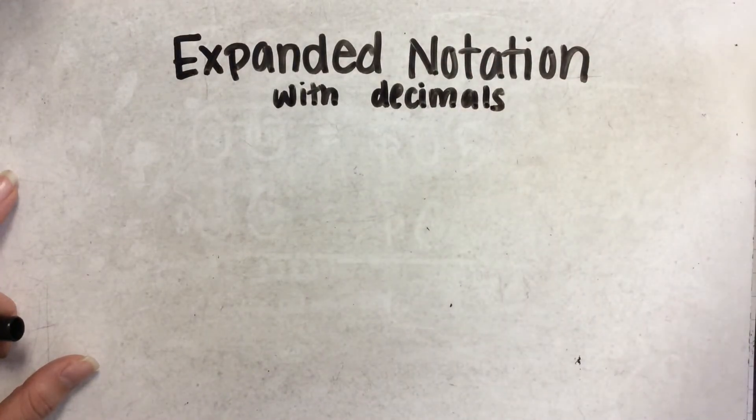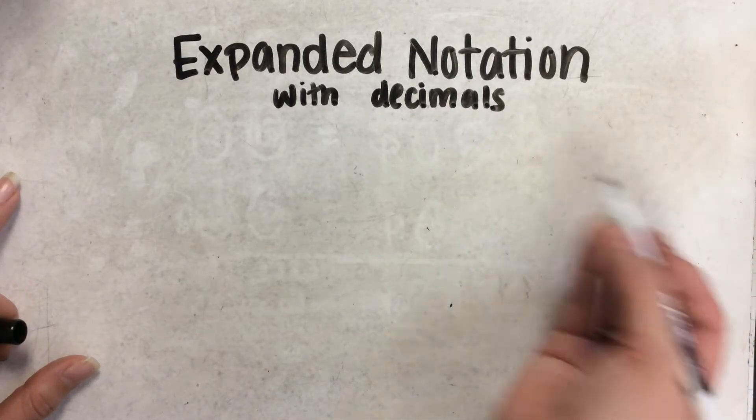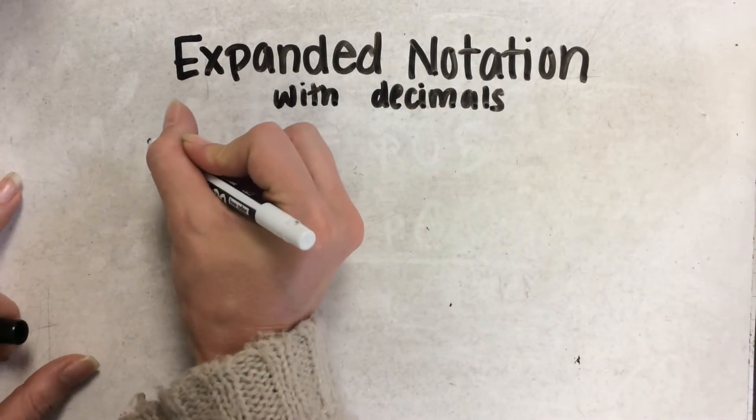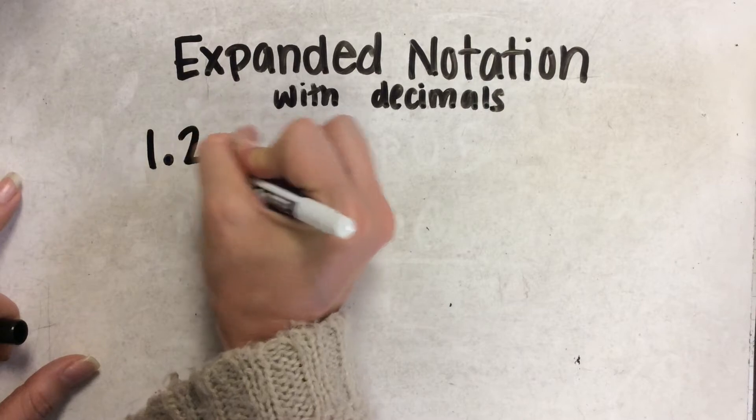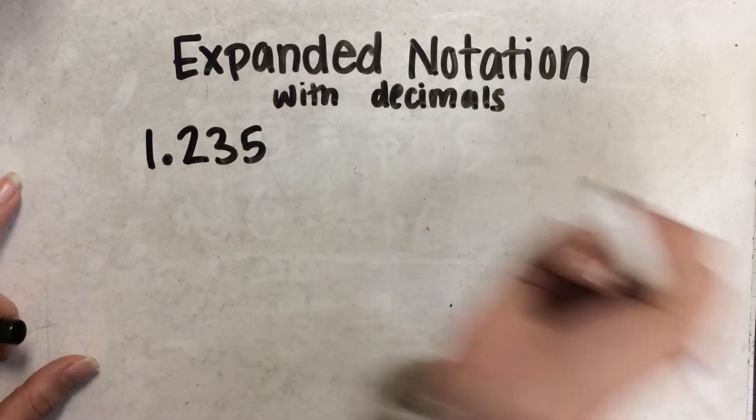This is fun because we can use decimals, but we can also use fractions. We'll start with the number 1 and 235 thousandths.